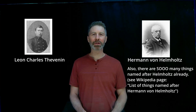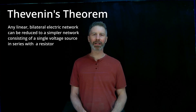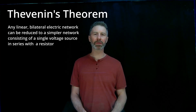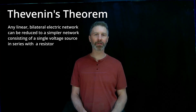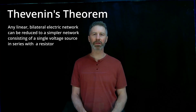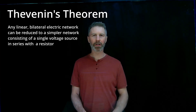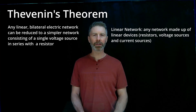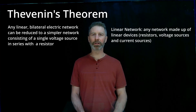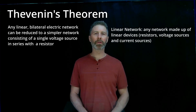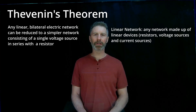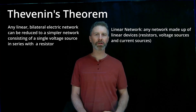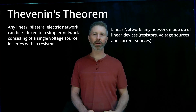Thevenin's Theorem states that any linear bilateral electric network can be reduced to a simpler network consisting of a single voltage source in series with a resistor. A couple of terms that may not be super familiar: a linear network is any network made up of linear devices. If we're talking about DC circuits, which we are right now, the only three components we need to care about are resistors, voltage sources, and current sources.